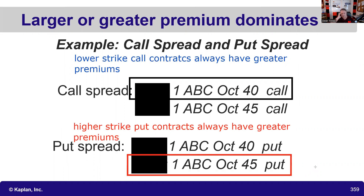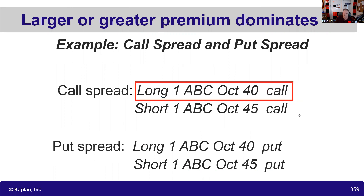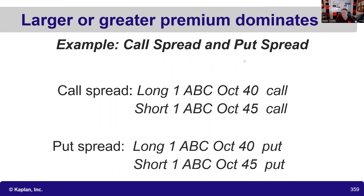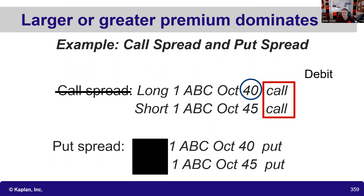Now it's time for the reveal. I bought that 40 call, and the 40 call is the dominant leg. Even with missing premiums, I can establish that it has the greater premium — so this is a debit call spread, and it's bullish. For the put spread, this is a credit put spread because the 45 has the greater premium. Even with missing premiums, you can determine quite a bit. The 40 call is dominant, the 45 put is dominant — we know the difference in premiums should widen for the debit call spread.